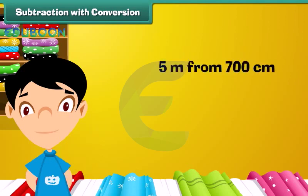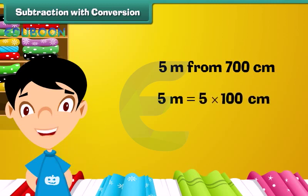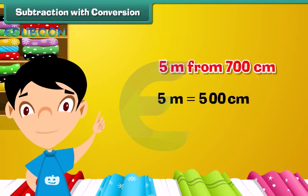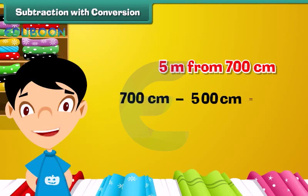In another example, 5 meters is equal to 500 centimeters, and 200 centimeters is added or subtracted accordingly.